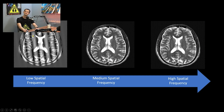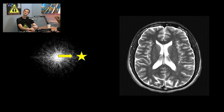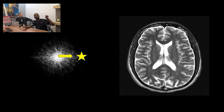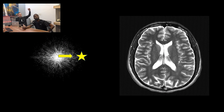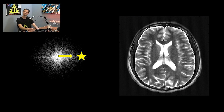Could this happen in the phase or frequency direction? It can happen in either. The direction of the lines depends on how the pixel is plotted — if you wanted the lines to be horizontal, the star would need to be more superior in k-space. Robert got that right, and we have a picture of that coming up.